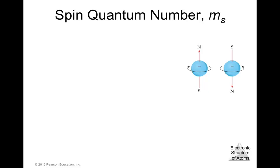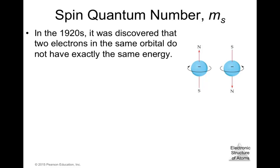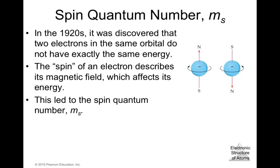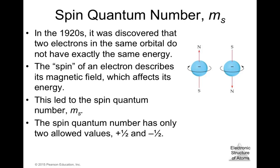There is a fourth quantum number: the spin quantum number m_s. In the 1920s it was discovered that two electrons in the same orbital do not have exactly the same energy. The spin of an electron describes its magnetic field, which affects its energy. The spin quantum number m_s can have values of +½ or −½.